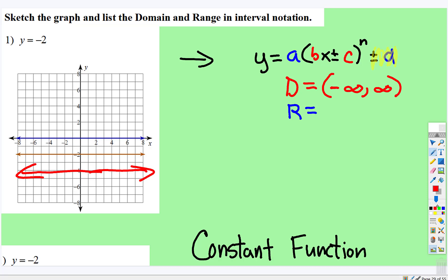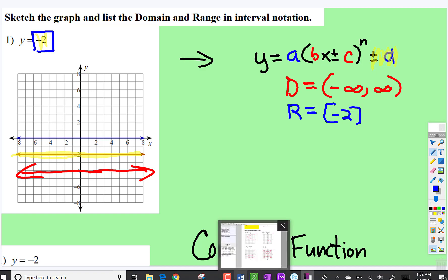Look at what the range is doing. The range is the interesting piece. It doesn't go up or down. It is stuck right there at negative 2, and because it touches negative 2 you use the brackets like this. So for the constant function the range will always be square brackets around whatever the function is equal to. And that's it for this one.